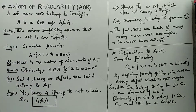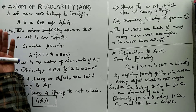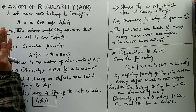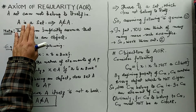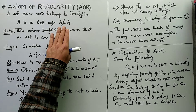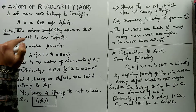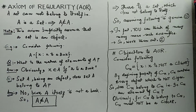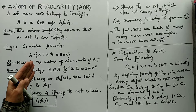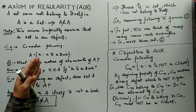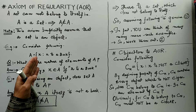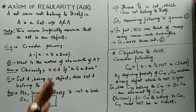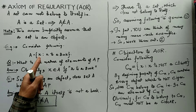The answer is provided by the axiom of regularity, which states that a set cannot belong to itself. So if I have a set A, the axiom of regularity says it cannot be a member of itself. In this axiom we implicitly assume that a set itself is an object. Now consider this example: I have a set denoted by A, defined as all objects X such that X satisfies a defining property.